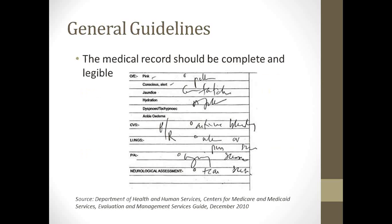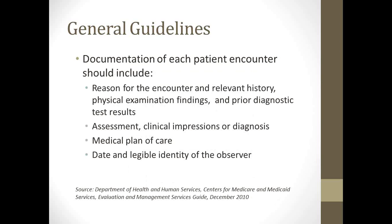The medical records should be complete and legible. All of these general guidelines come directly from the Department of Health and Human Services, their Evaluation and Management Services Guide from December 2010. Required elements include: a reason for the encounter and a relevant history, physical examination findings, prior diagnostic test results — you can't just say 'same reason as before' — assessment, clinical impressions or diagnosis, medical plan of care, and date and legible identity of the observer.